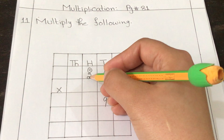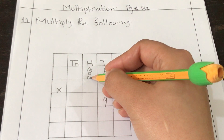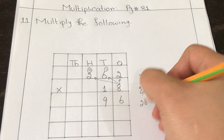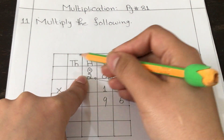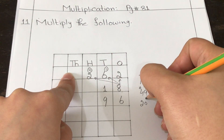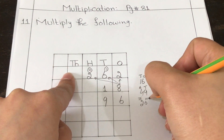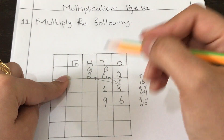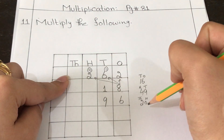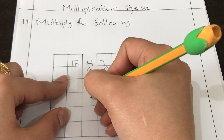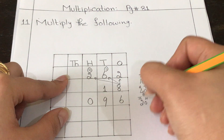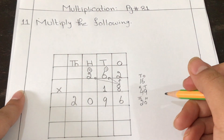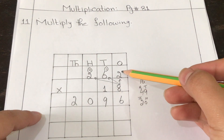Now multiply eight by two again: eight twos are 16, and 16 plus 4 carry is 20. The place after hundreds is thousands, so we convert into hundreds and thousands. I'll write zero directly in the hundreds column and two in the thousands column. We have now completed the multiplication of the ones place digit.